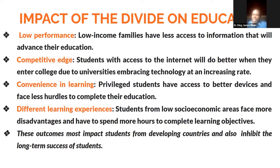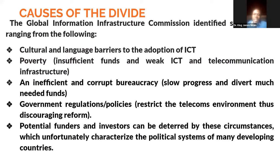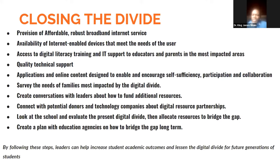An inefficient and corrupt bureaucracy is another factor. Where you have a corrupt government, educational funds get siphoned. In Africa, leaders tend to divert resources meant for education. UNESCO recommends 26% of annual budgets for education, but most countries barely reach 10%, with most rotating between 5 to 9%. Money that should have been used to provide internet, resources, and facilities for students to learn gets diverted. Additionally, government regulations make it difficult for digital penetration, and potential funders find it hard to provide access to digital platforms because of this.